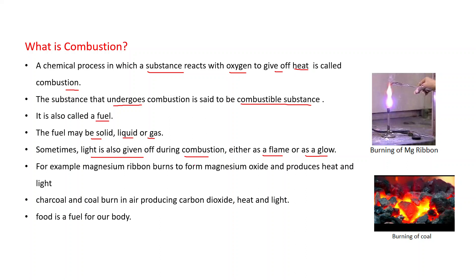Sometimes light is also given off during combustion, either as a flame or as a glow. For example, magnesium ribbon burns to form magnesium oxide and produces heat and light. Charcoal and coal burn in air producing carbon dioxide, heat, and light. Food is also a fuel for our body because food provides heat energy to our body.